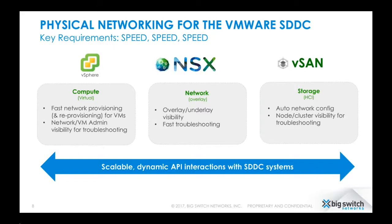Modern data center networks must be efficiency-oriented — operating smarter, faster, and at lower cost — and effectiveness-oriented, defending against attacks, ensuring application delivery, and driving business innovation. A software-defined data center requires a network underlay that operates at the speed of VMs, integrating across all VMware SDDC solutions to provide network automation, visibility, and rapid troubleshooting. This is where Big Cloud Fabric comes in.